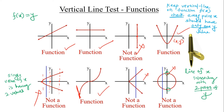The vertical line test checks whether a graph represents a function. Place a vertical line on the graph and check that for each x-coordinate, the line touches only one point. If it touches two or more points, it is not a function. The first two diagrams pass the vertical line test and are functions. The third diagram fails — for one x-coordinate, there are multiple Y values — so it is not a function.